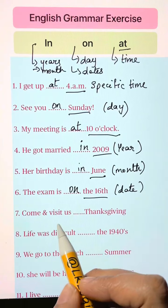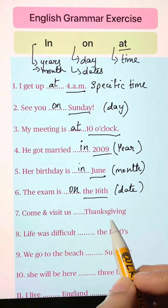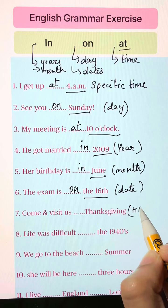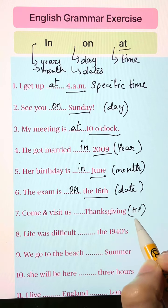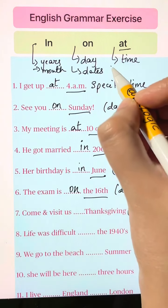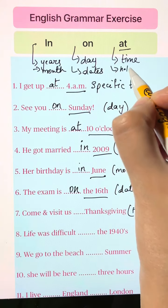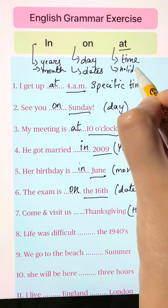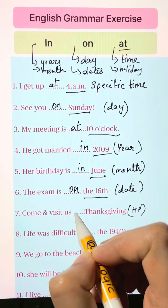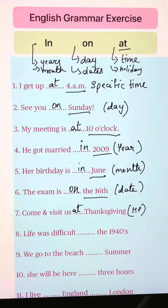Come and visit us blank Thanksgiving. If you're talking about any holiday period, we use 'at.' Come and visit us at Thanksgiving.